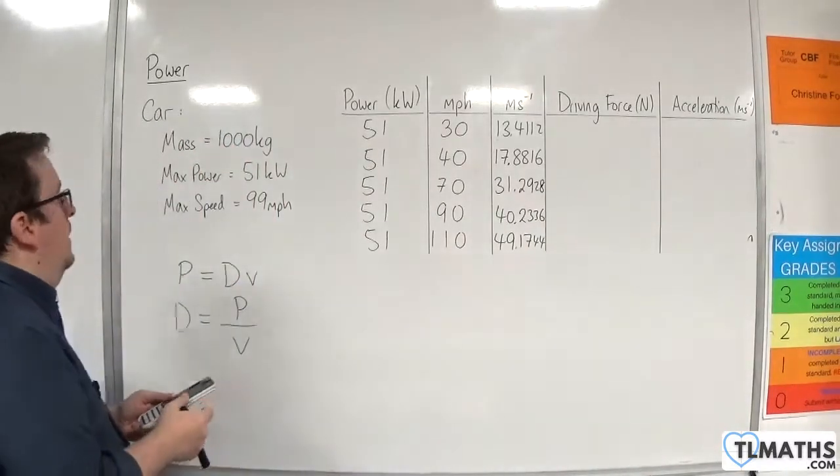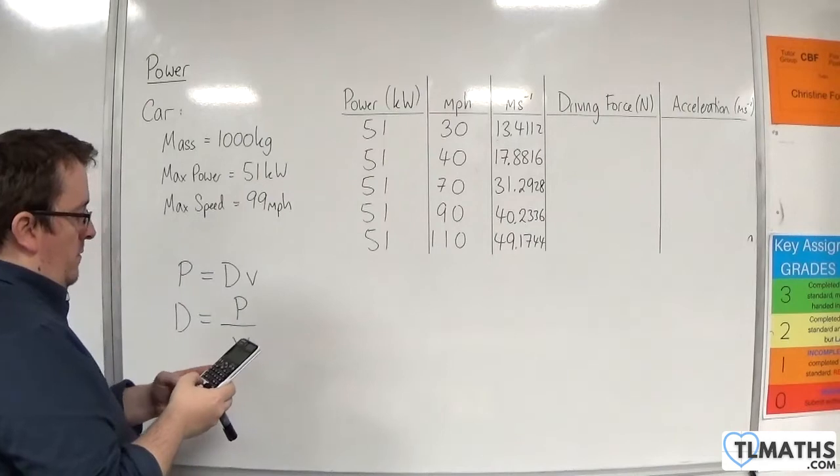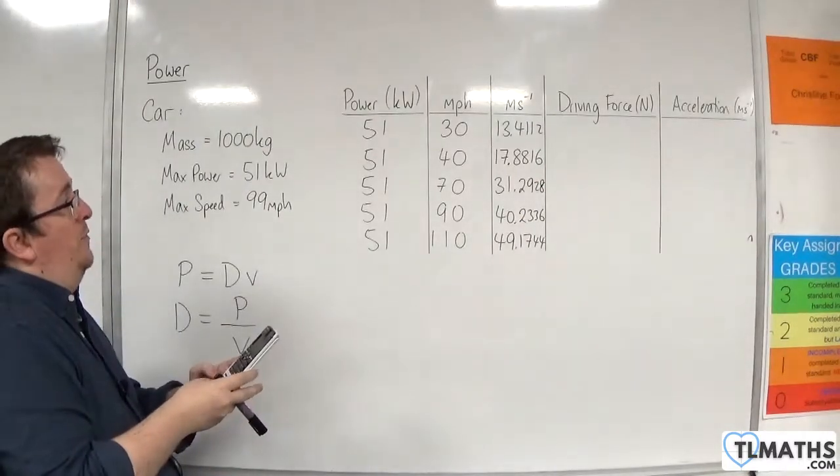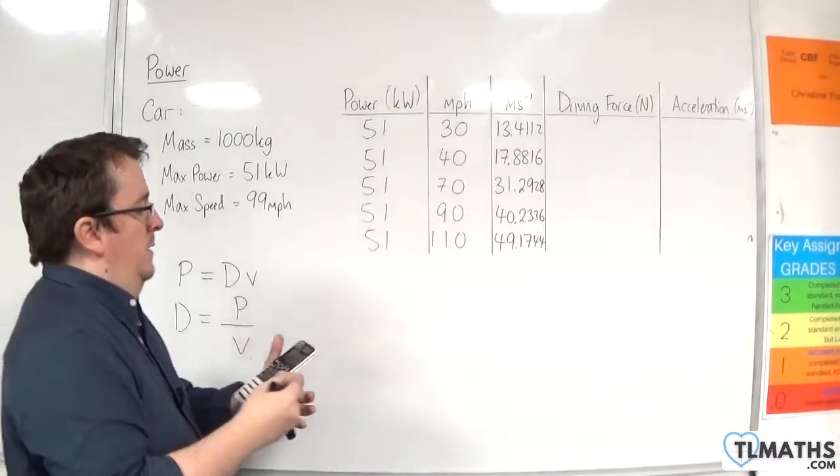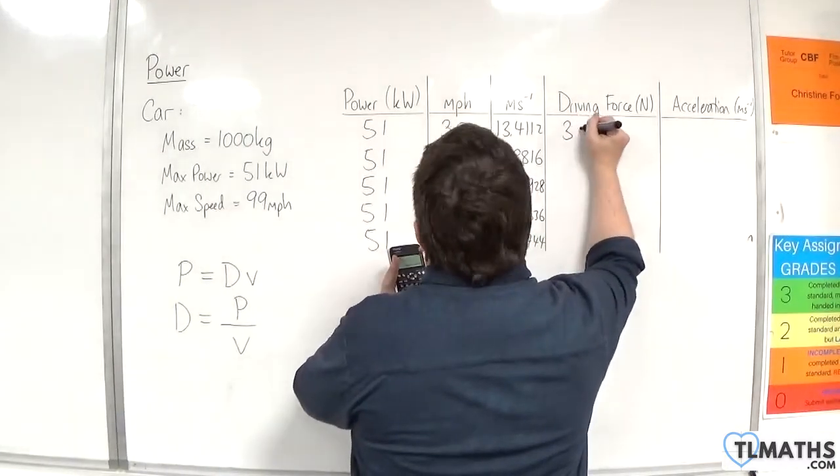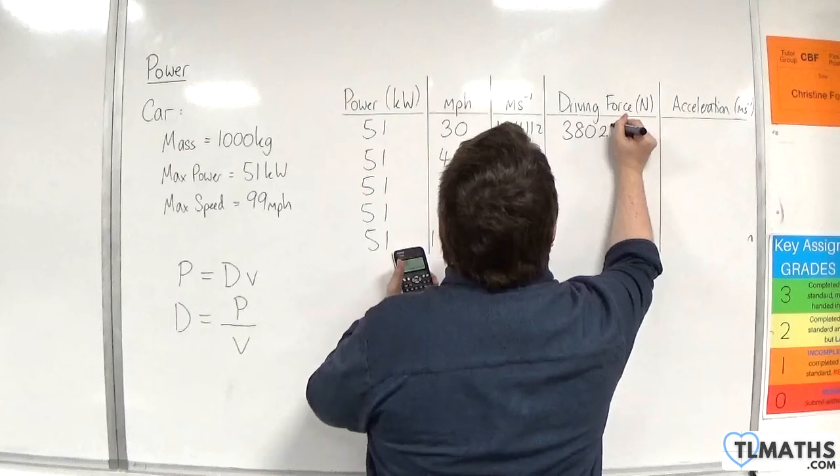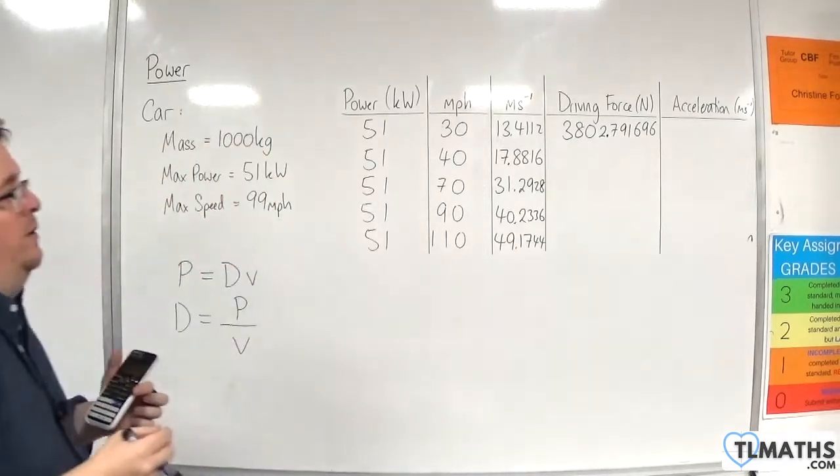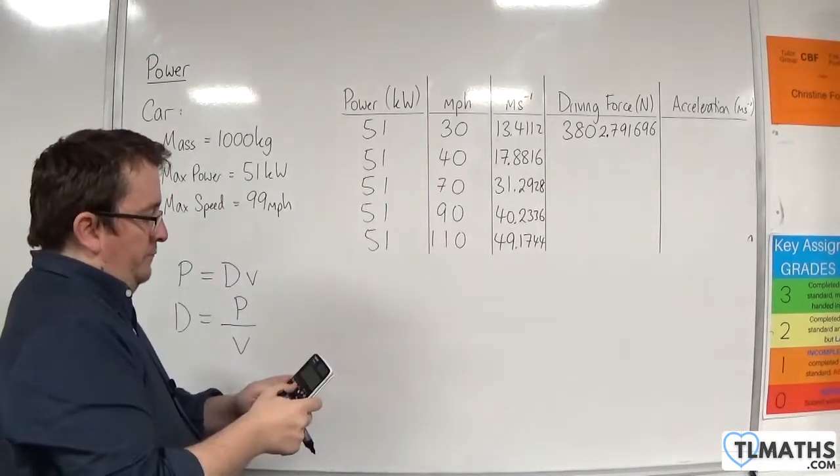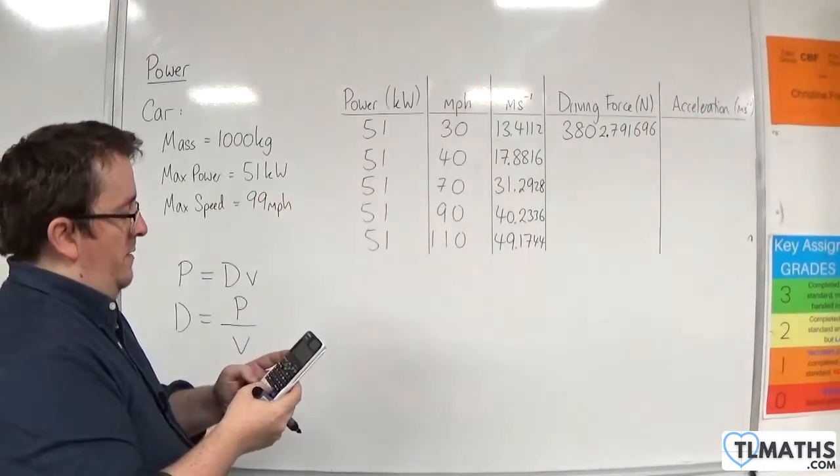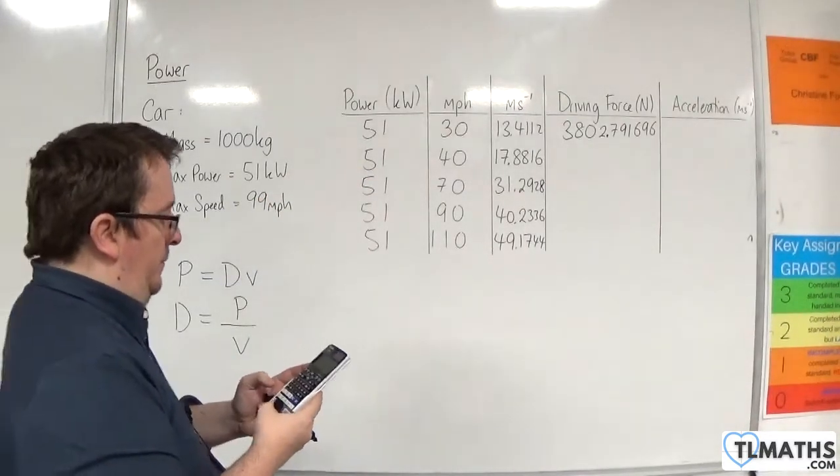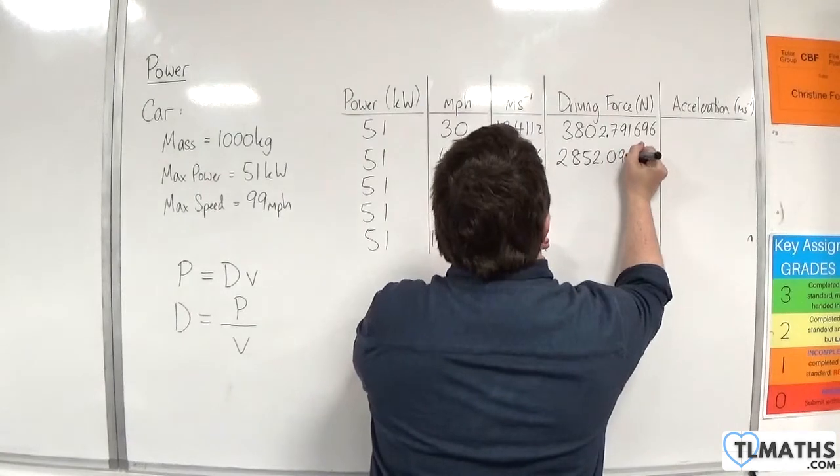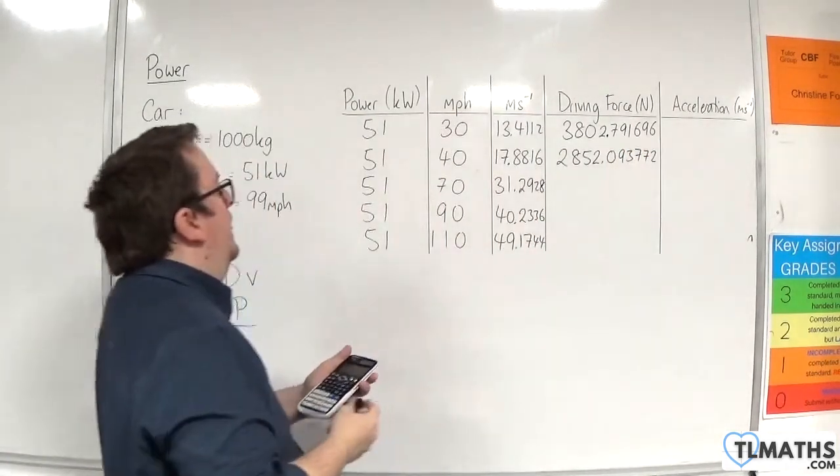First of all, I'm going to get 51,000 and divide it by the velocity in meters per second, so 13.4112. I get 3802.791696. I'm just going to write down the full calculator display. Then 51,000 divided by 17.8816, and we have 2,852.093772.